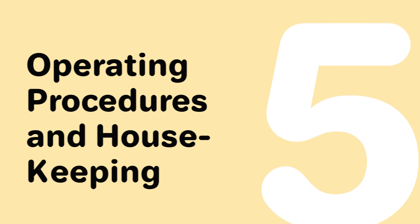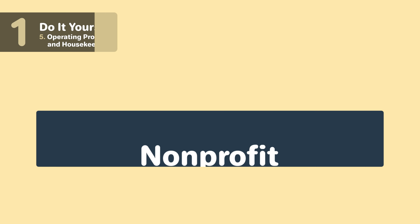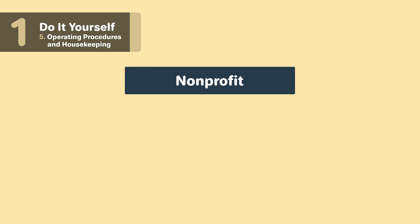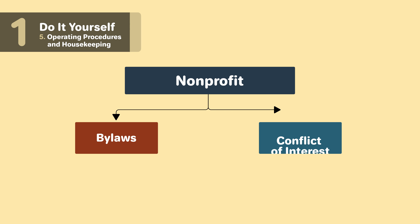Step five: operating procedures and housekeeping. Once your nonprofit corporation has been formed, you'll want to start getting the structure together and determine how your nonprofit will be run, starting with the bylaws and conflict of interest policy.